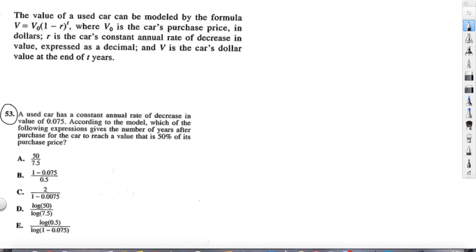Alright, a lot of information there. Let's see how it's used. 53 says a used car has a constant annual rate of decrease in value of 0.075. According to the model, which of the following expressions gives the number of years after purchase for the car to reach a value that is 50% of its purchase price?